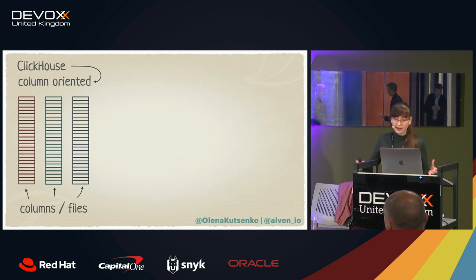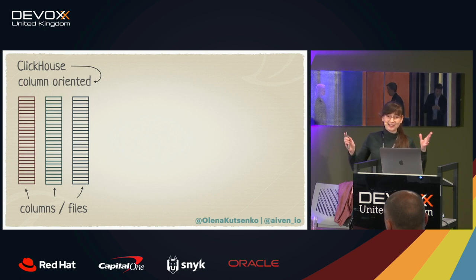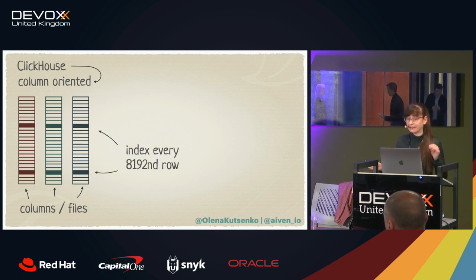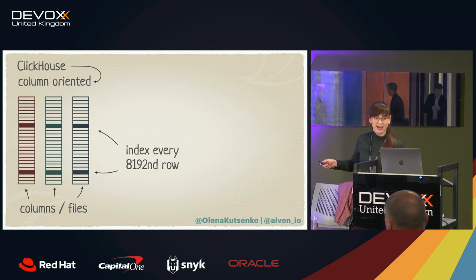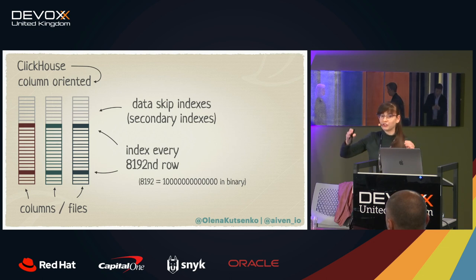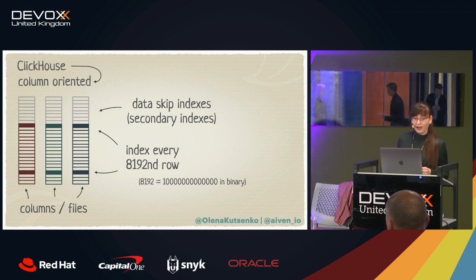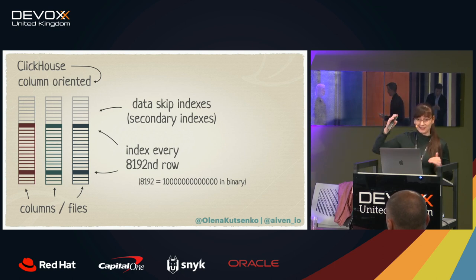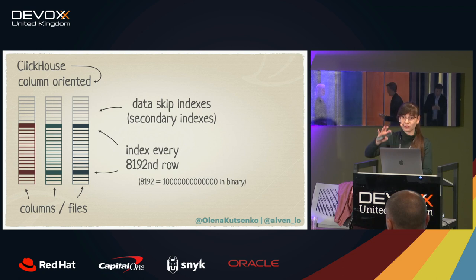To navigate the columns, ClickHouse uses indexes, and there are two types available. The first is the primary index, which is quite different from primary indexes in other solutions — it doesn't index every row, it indexes every 8,192nd row, which is called a sparse index. The secondary index is also unusual because it describes which data will be safe to skip when performing a computation. Another tool ClickHouse uses to be fast is vectorized execution: when processing data, ClickHouse divides the columns into separate chunks and assigns different CPU cores to work on those chunks of data in parallel, making computations quite efficient.